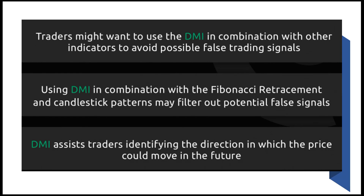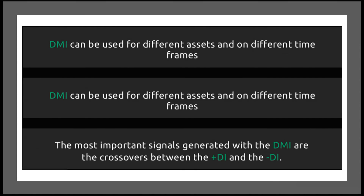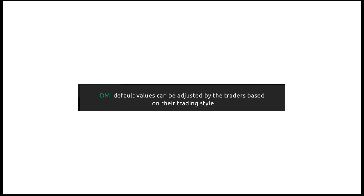DMI assists traders in identifying the direction in which price could move in the future. It can be used for different assets and on different time frames, and is easy to put on your charts — just click on the DI indicator and it drops onto your charts. Adjust it to the time frame you're using and it will quickly adapt. The most important signal generated with DMI is the crossover between DI plus and DI minus. DMI default values can also be adjusted by the trader based on their trading style.